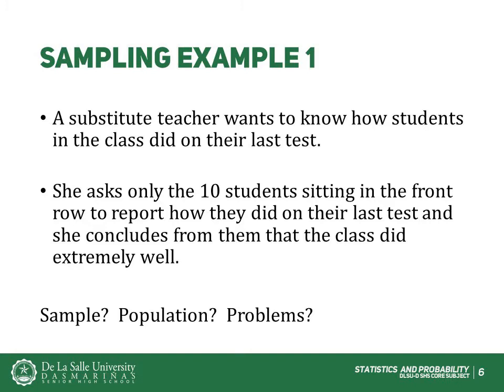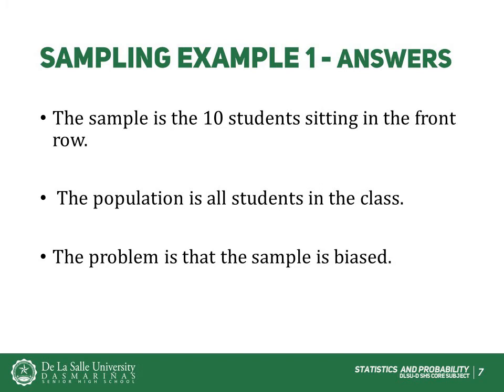What is the sample? What is the population? Can you identify any problems with choosing the sample in the way that the teacher did? The sample is the 10 students sitting in the front row. The population is all students in the class. The problem with choosing this sample is that it is biased. Those who sit in the front row tend to be more interested in the class and tend to perform higher than students who sit elsewhere. Thus, the sample may be performing much better than the population. If the substitute teacher puts every student's name in a hat and randomly chooses 10 names, the sample would not be biased.